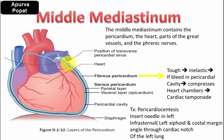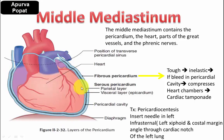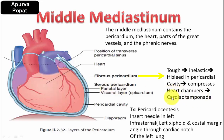The middle mediastinum consists of the heart, pericardium, parts of the great vessels, and the phrenic nerve. Just as the lungs are covered by pleura, the heart is covered by pericardium. The serous pericardium has two layers — a visceral layer close to the heart surface and a parietal layer — forming the pericardial cavity. The fibrous pericardium is a stiff structure that cannot stretch instantaneously. A free wall rupture of the left ventricle can cause blood to accumulate in the pericardial cavity, compressing the heart and compromising cardiac output. This, along with raised jugular venous pressure and muffled heart sounds, constitutes cardiac tamponade — an emergency requiring pericardiocentesis through the cardiac notch between the left border of the xiphoid process and the left costal margin.